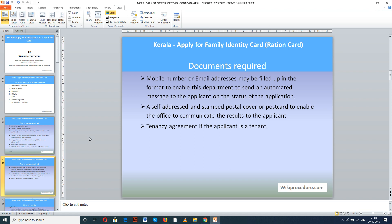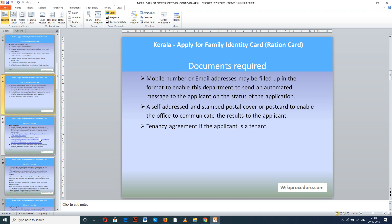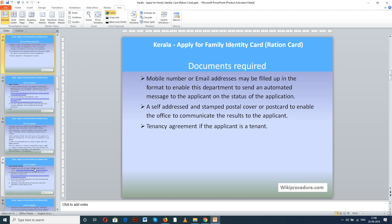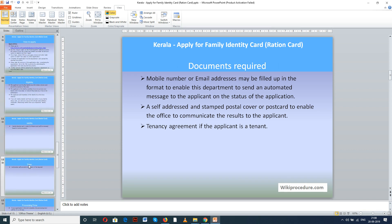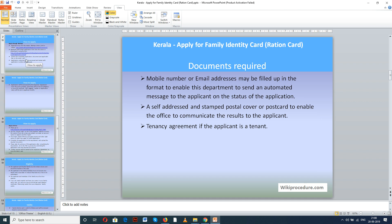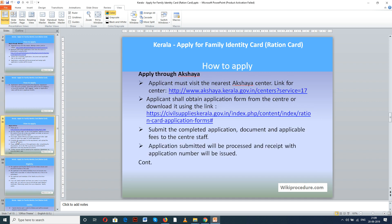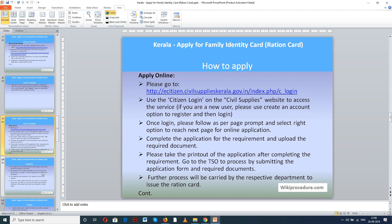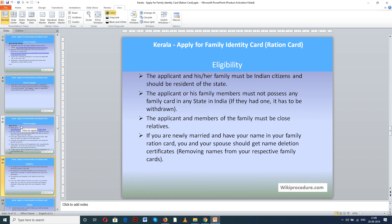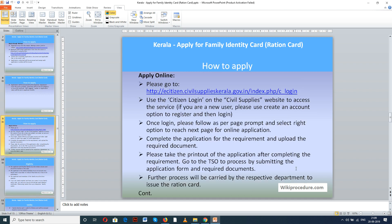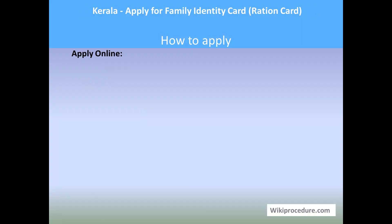A tenancy agreement is required if the applicant is a tenant. These above-mentioned documents and information are required to process. However, when applying, if the authorities or the online requirement for this procedure require additional information or any other document, then you have to provide the same for smooth processing as per the advice of the authorities. Today this procedure is sponsored by Wikiprocedure.com.